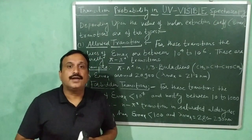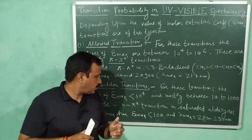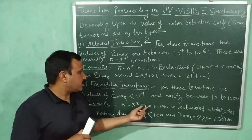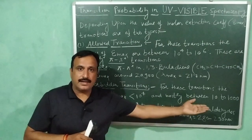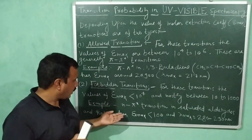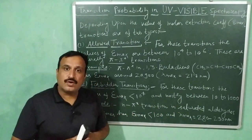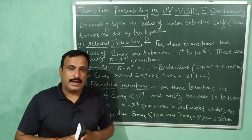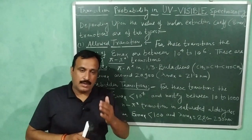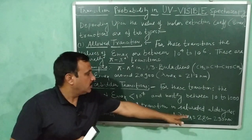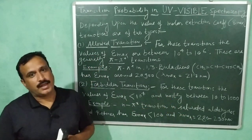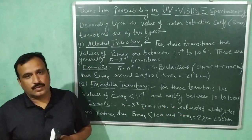The example is n to π* transition. N to π* transition in saturated aldehydes and ketones has molar extinction coefficient less than 100, and the value of lambda maximum is from 280 to 300 nanometers.